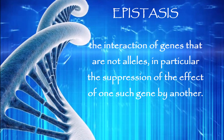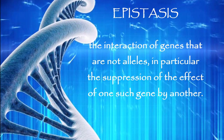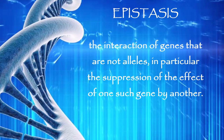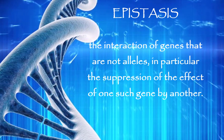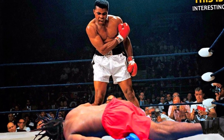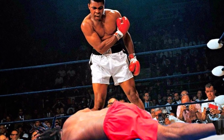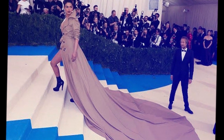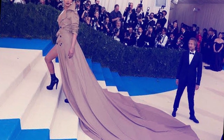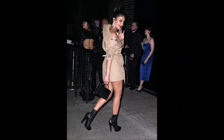Epistasis is nothing but the interaction of genes that are not alleles. In short, it describes the phenomena when one gene affects another gene. For example, there is a boxer who stands with a motive to do something and another boxer comes and punches him. Or if a girl is wearing a beautiful dress by a very common designer and another very rare designer comes and modifies the dress.